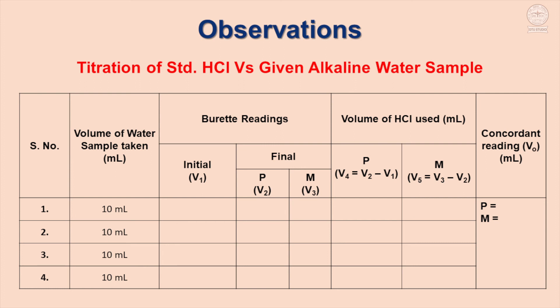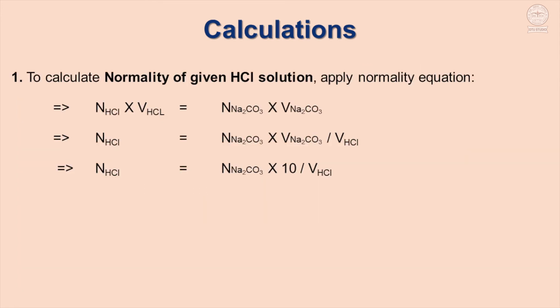Based on these readings, V4 is calculated as V2 minus V1, showing the neutralization of sodium hydroxide and half the carbonate. V5 represents the neutralization of sodium bicarbonate. The normality of the given hydrochloric acid solution is calculated based on the formula N₁V₁ = N₂V₂.